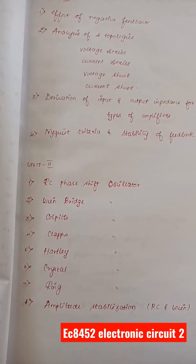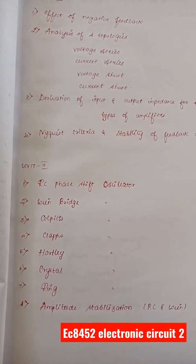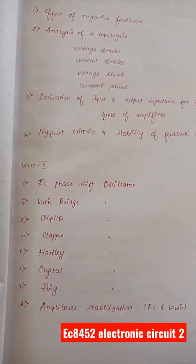Second unit, all the 7 oscillators: RC phase shift oscillator, Wien bridge, Colpitts, Clapp, Hartley, Crystal, Ring, and then amplitude stabilization.